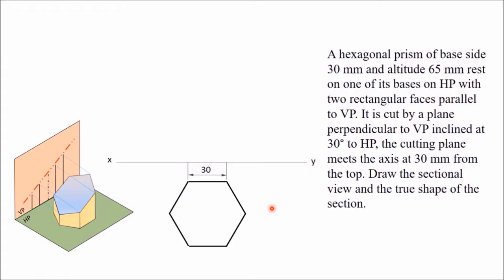Next, you need the center of this hexagon. For that, join two opposite corners. Join these two opposite corners and these two opposite corners — the intersection of these will give the center point, representing the axis of the hexagonal base. Now mark all the corner points: A, B, C, D, E, F — these are all the bottom corner points.